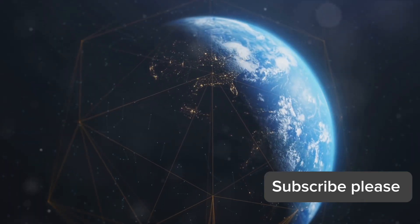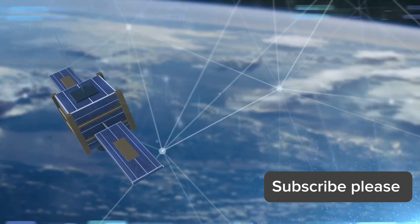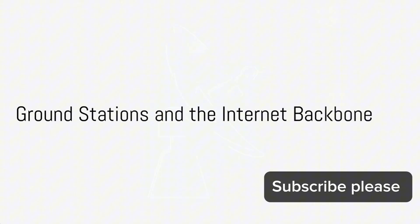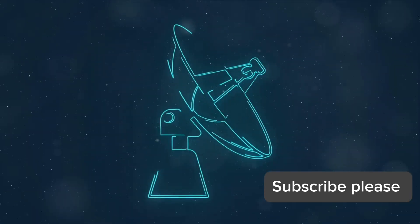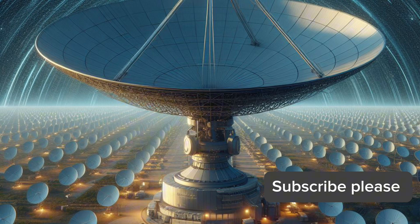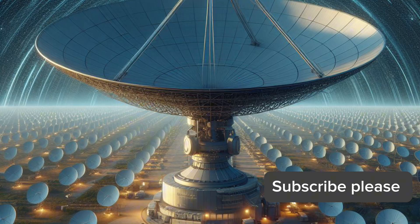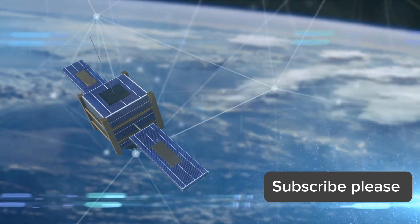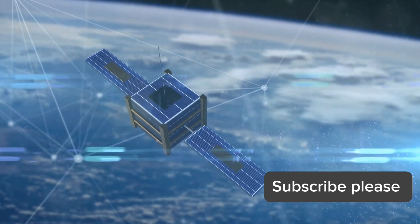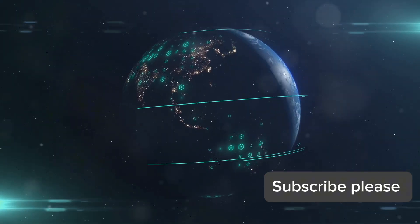These satellites are just one part of the puzzle. The ground stations play an equally important role. Ground stations act as the liaison between the satellites and the internet backbone. These strategically positioned facilities serve a crucial role in the Starlink system, transmitting data to and from the satellites. Think of them as gateways between the celestial and terrestrial realms of the internet.